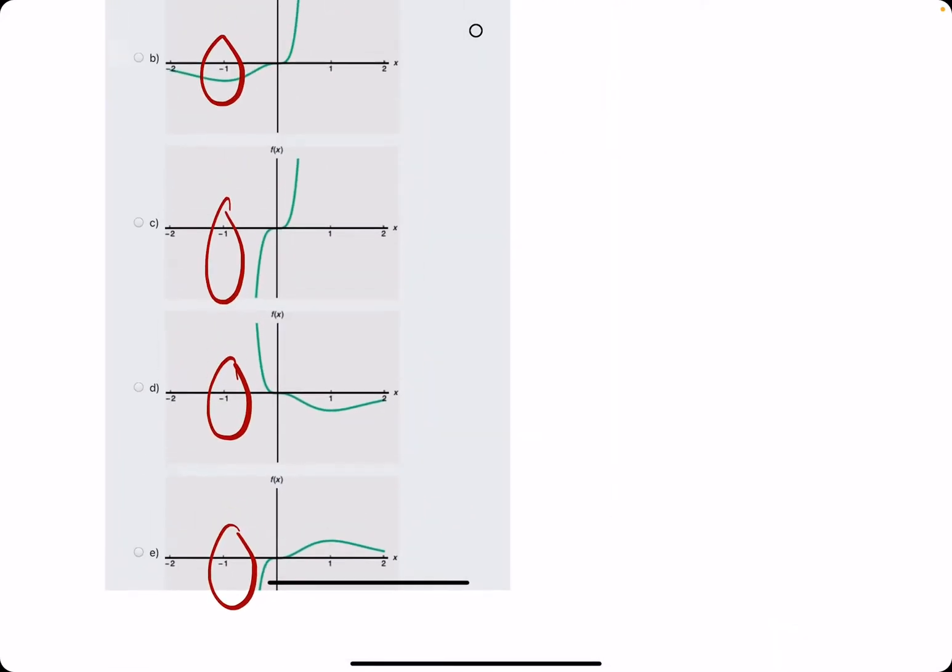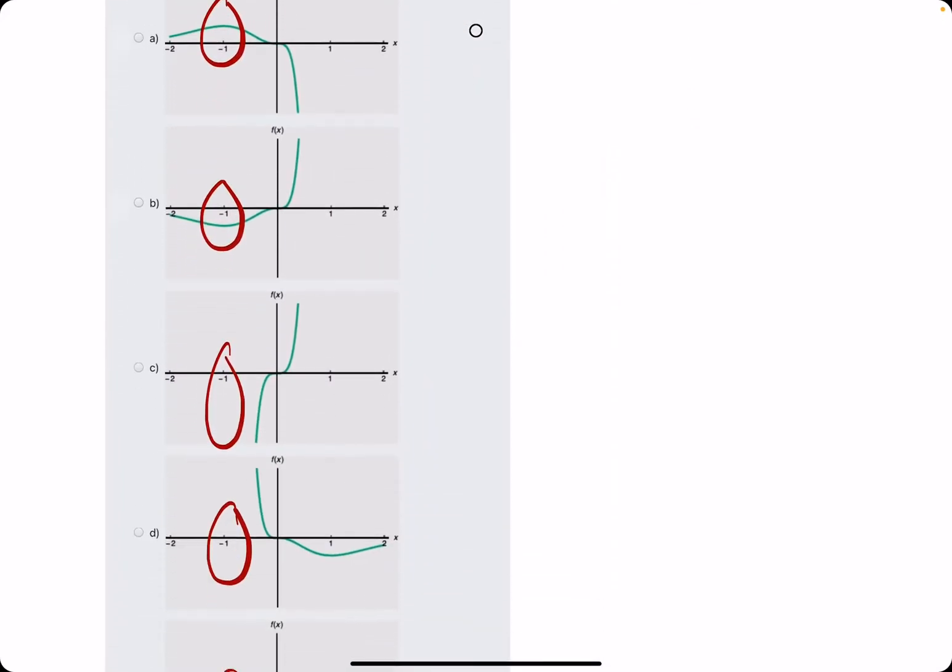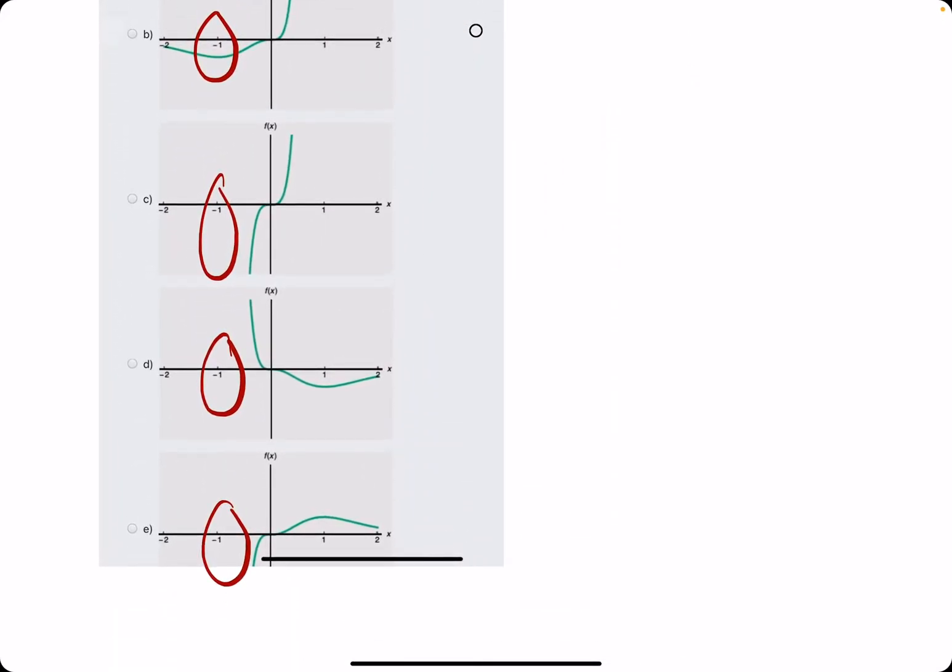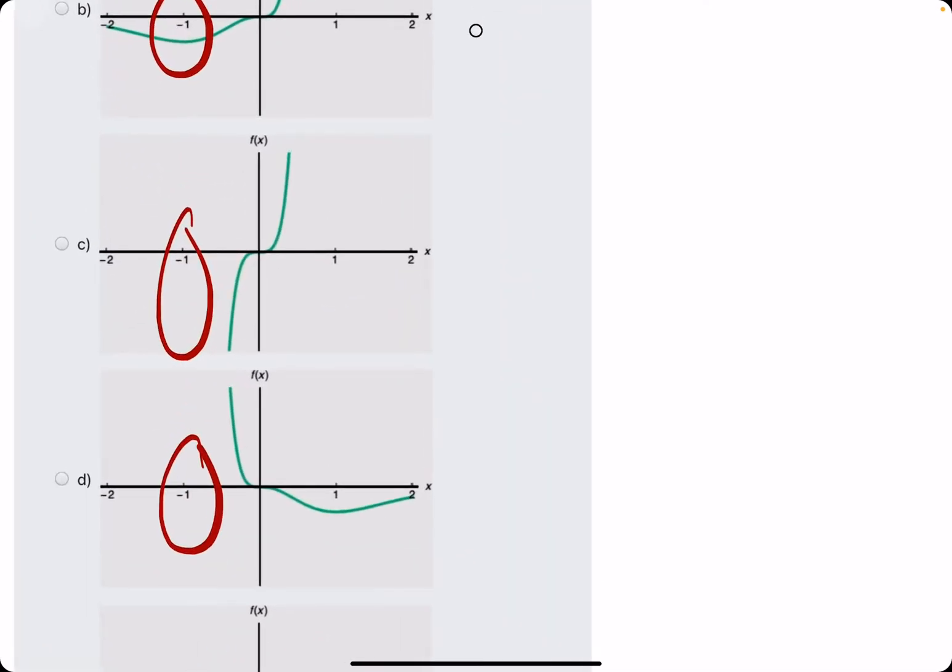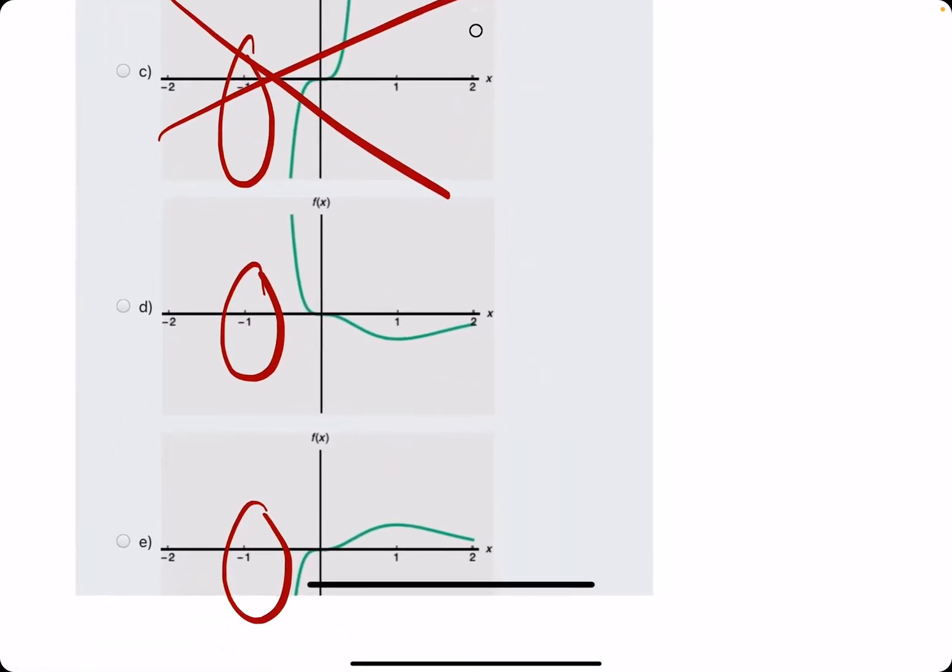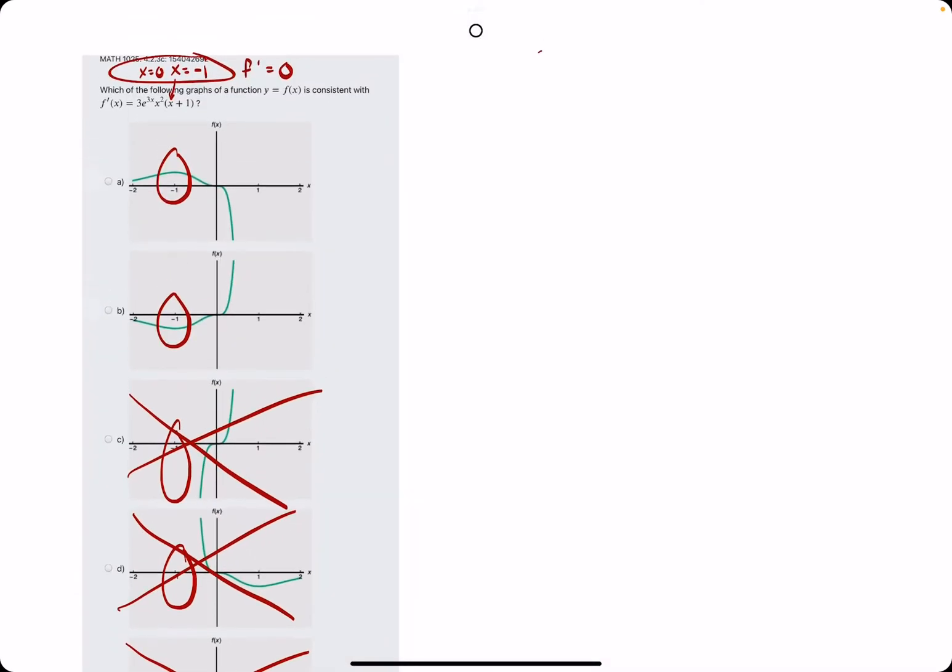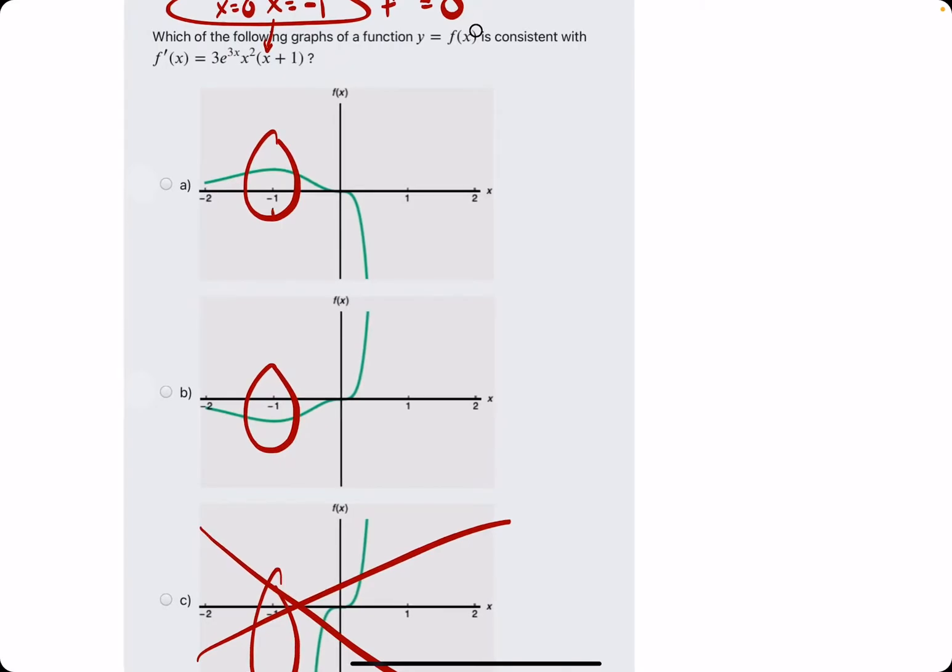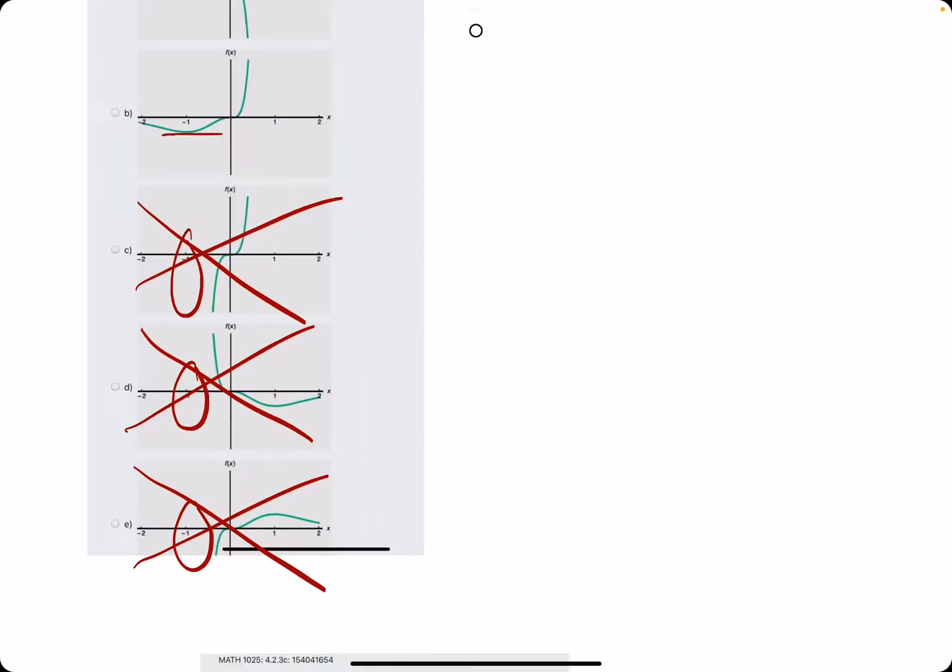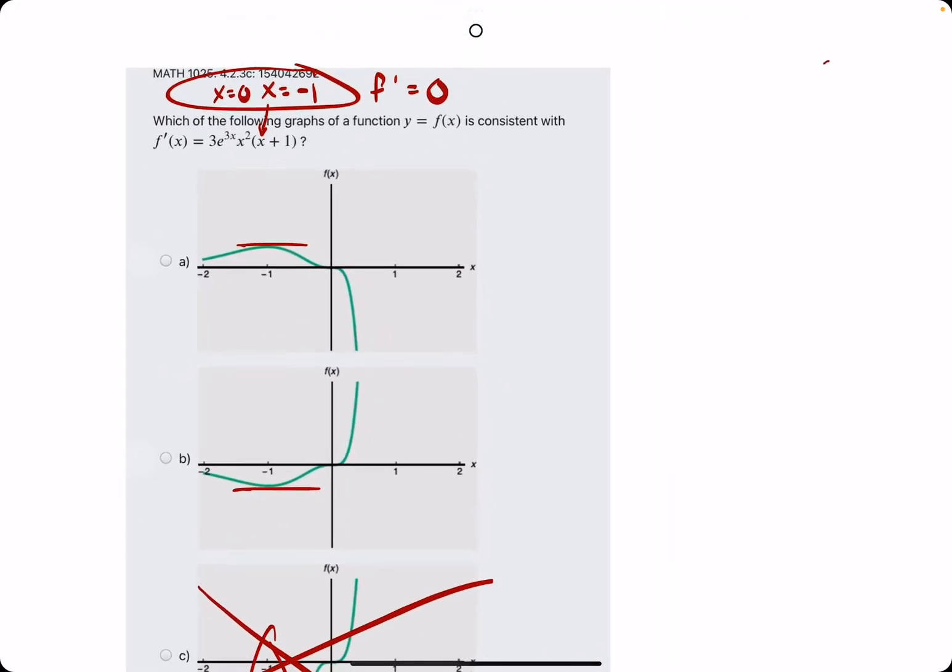So as we scan up and down the negative 1's, the x equals negative 1's for all these graphs, we can see that nothing is really going on at negative 1 for c, d, or e. We don't have a 0 slope or a max or a min at negative 1 for any of these except for a and b. So we narrow it down to a and b, and then we recognize that a and b are sort of just opposites of one another.